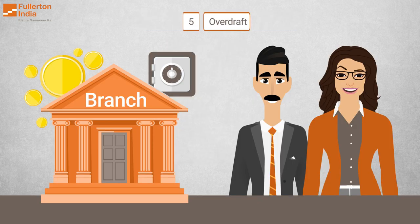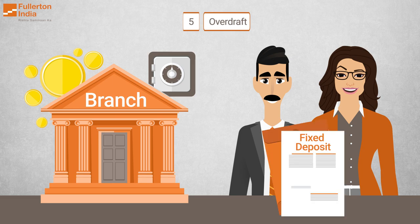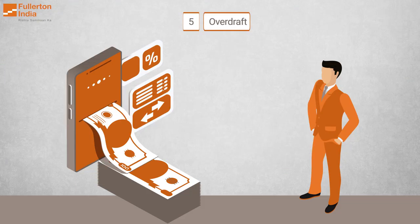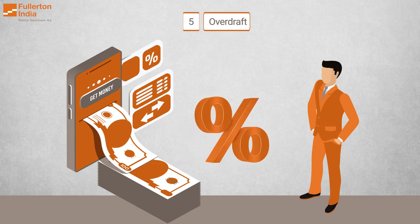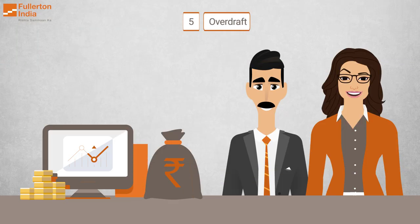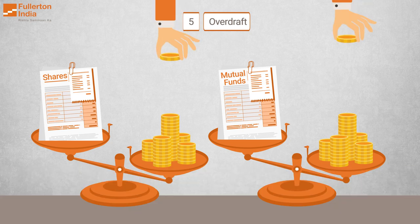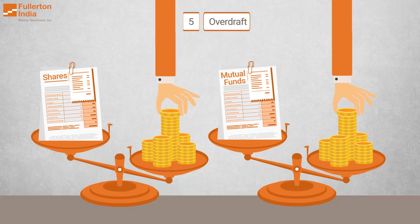5. Overdraft. An overdraft is a credit agreement in which a lender approves a certain loan limit for the borrower, often using a financial asset such as a fixed deposit as security. The overdraft facility lets you withdraw an amount as per your needs from the approved limit and pay interest only on the amount used. Loans against securities are similar and can be taken against any financial asset, including shares and mutual funds.